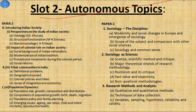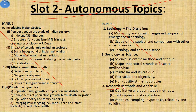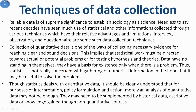As you already know, we are covering slot two autonomous topics. We have already covered topics of paper two, and in paper one we have finished social order, discipline, and sociology of science. At present we are at research method analysis and its subsection, that is techniques of data collection.